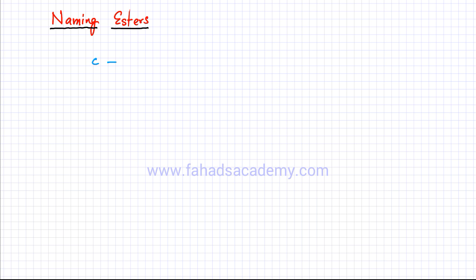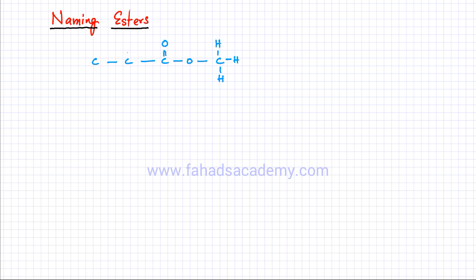So far we have learned how to draw esters, but we haven't learned how to name them. In this lecture we're going to learn how to name different esters. I'm going to draw a random ester molecule — there's an ester link over here. I'll complete all the bonds: there's CH3 on this side, two hydrogens on this carbon atom, and three hydrogens on this carbon atom.